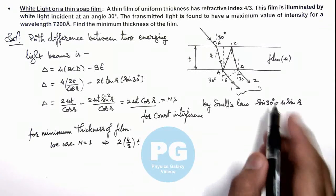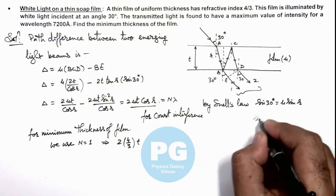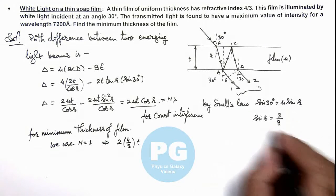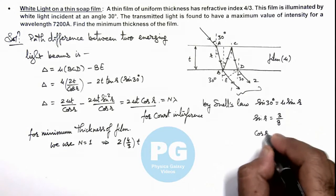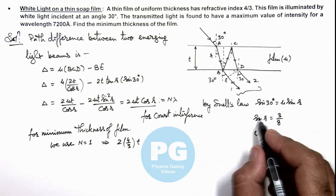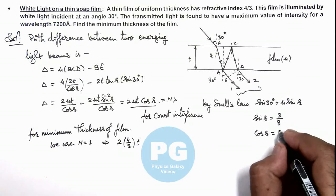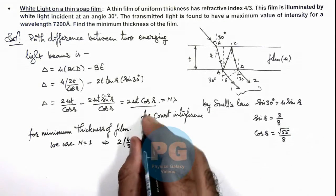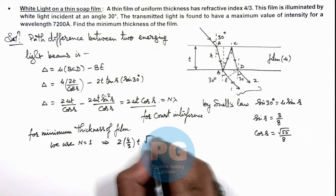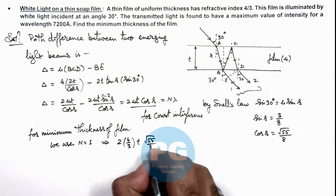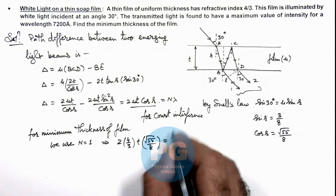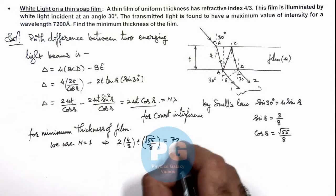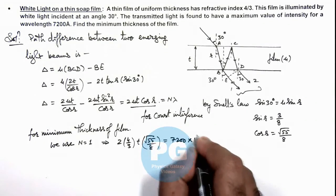Cos r we can calculate from here as value of sine r is equal to 3/8. So this gives us cos r is equal to root of 1 minus sine squared r, that is root 55 by 8. So if we substitute the value, this is root of 55 by 8 is equal to n we can take as 1, and the value of wavelength is 7200 into 10 to power minus 10.